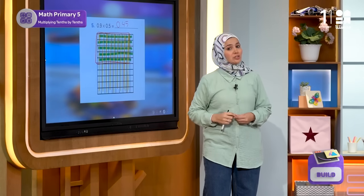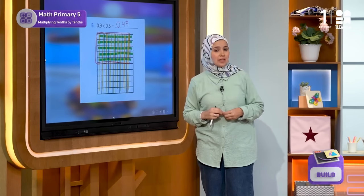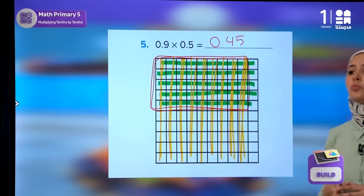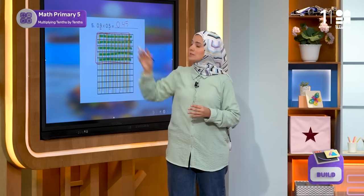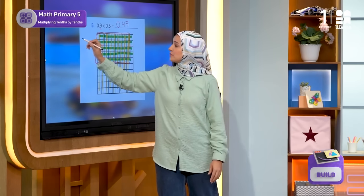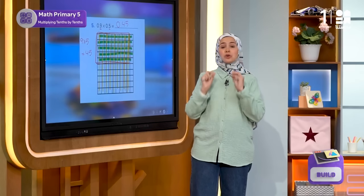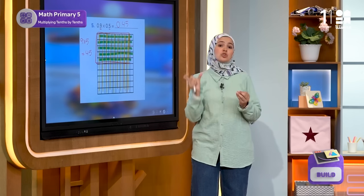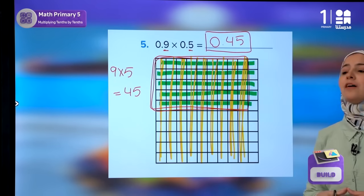I'm sure you got your answer correct. Now, after answering using the arrays, let's verify using the rule we concluded together. We multiply 0.5 times 0.9, considering the whole numbers: 9 times 5 equals 45. However, because we have tenths times tenths, we know from the rule that the answer should be in hundredths. So the final answer is 0.45.